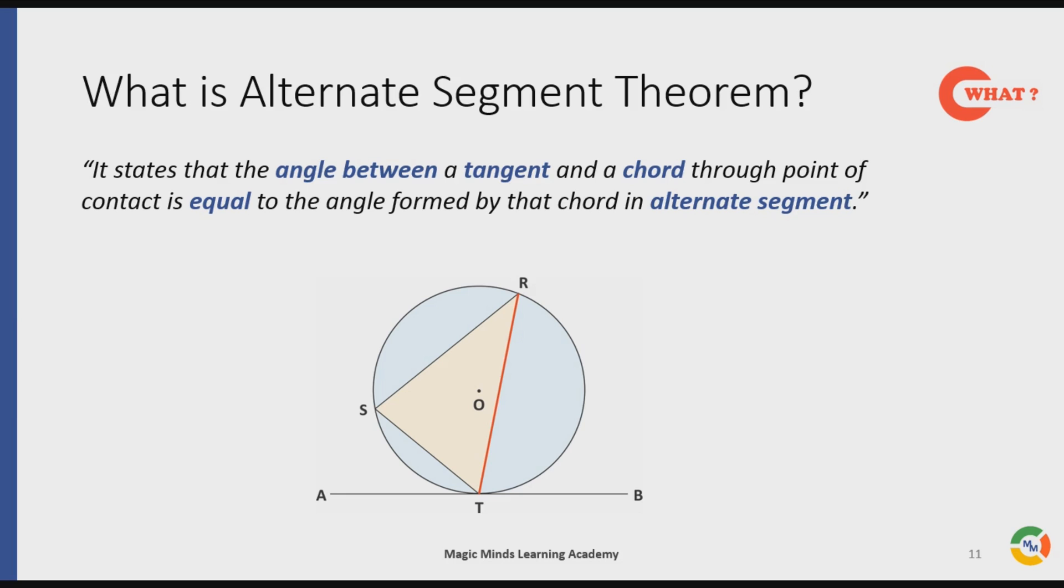Similarly we can also say that the angle between the tangent AB and the chord through point of contact T, that is chord ST, so angle between AB and ST through point T which is angle ATS, this angle is equal to the angle formed by the same chord in alternate segment, that is angle TRS.